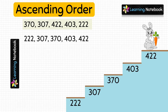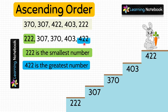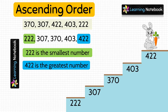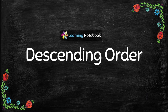Since it is in ascending order, the first number 222 is the smallest and the last number 422 is the greatest. Now you have understood the meaning of ascending order and how to arrange numbers in ascending order. If you have any problem regarding comparing numbers, watch our separate video on Comparing Numbers. Now let's move to our next topic: Descending Order.